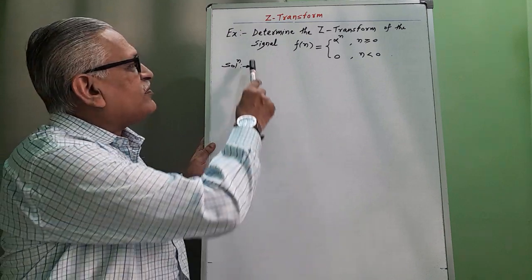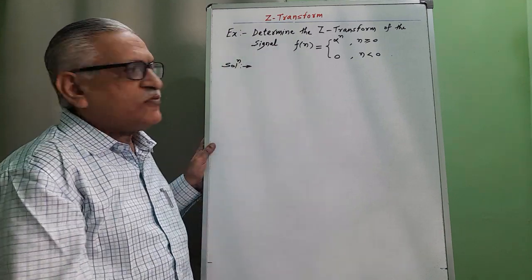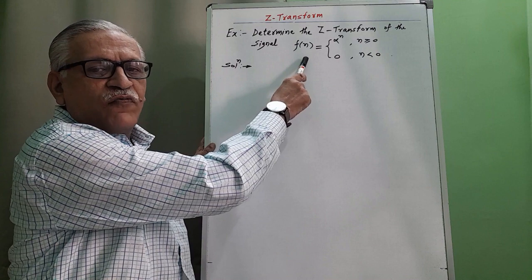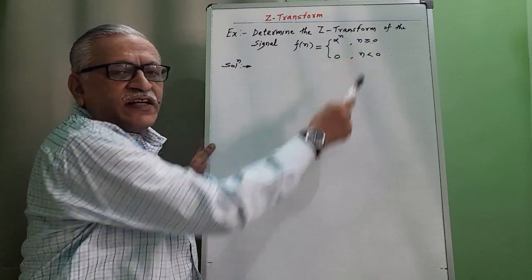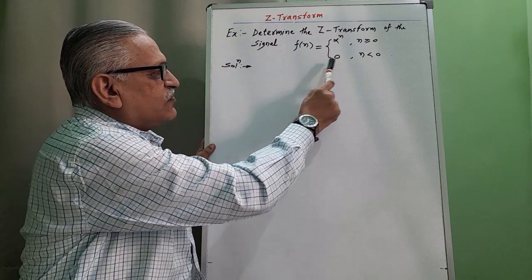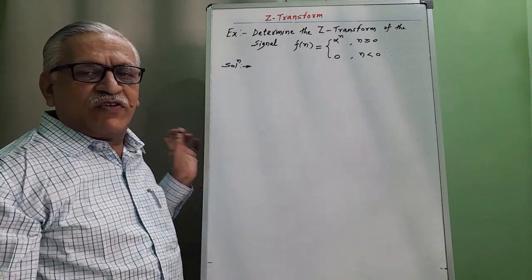Let us solve the problem. Determine the Z-transform of the signal f(n) equals alpha raised to n for n greater than or equal to 0, and 0 for negative values of n.